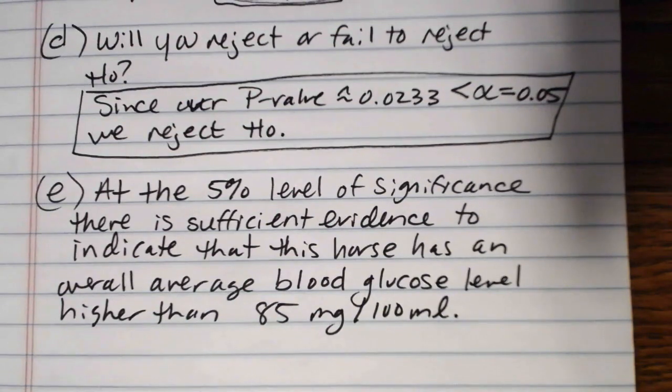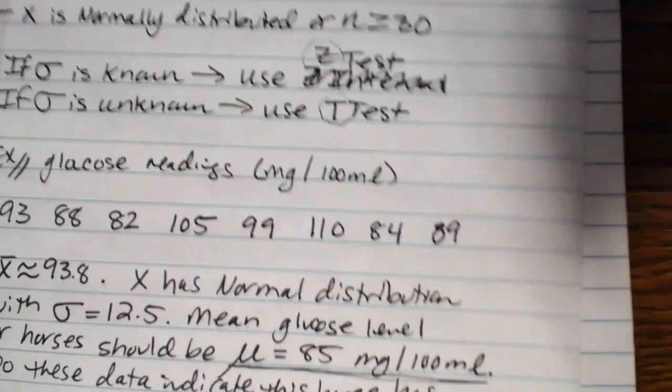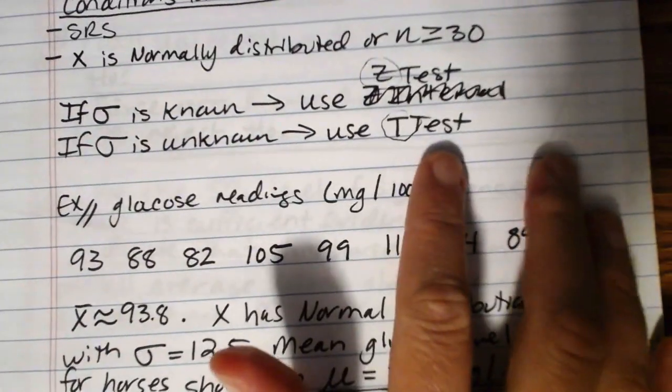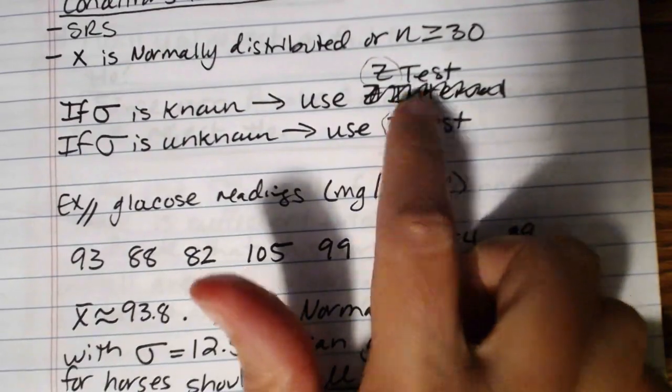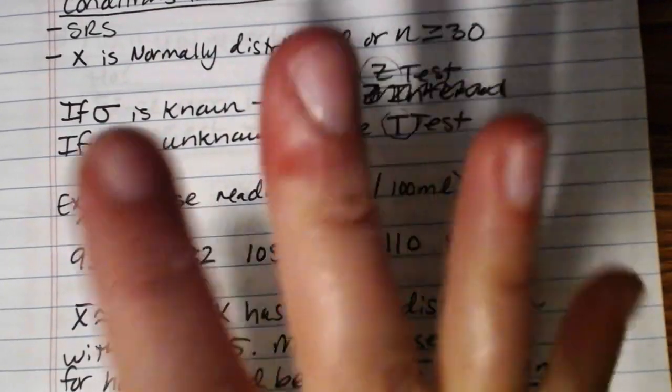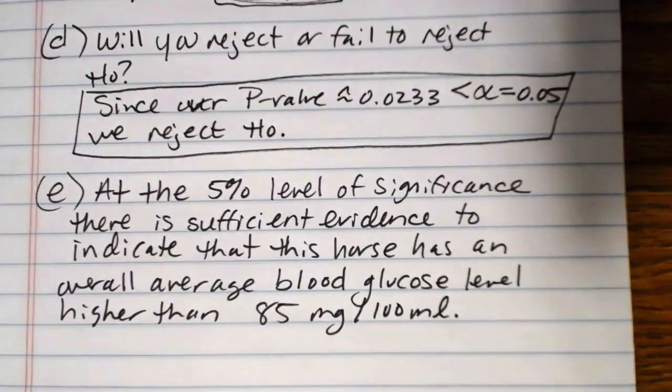Which, again, is not necessarily a good thing for the horse. It can be indicative of a blood sugar problem. Now, the only thing that would have differed had we not known sigma, is we would have used a t-test. So z if sigma is known, t if sigma is unknown, but the rest of the process remains the same. We'll see you next time.